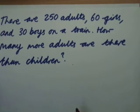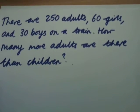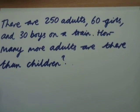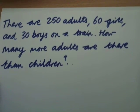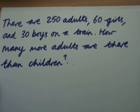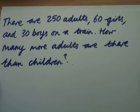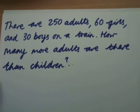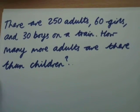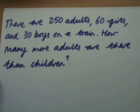So the word problem is in front of me here. There are 250 adults, 60 girls and 30 boys on a train. How many more adults are there than children?